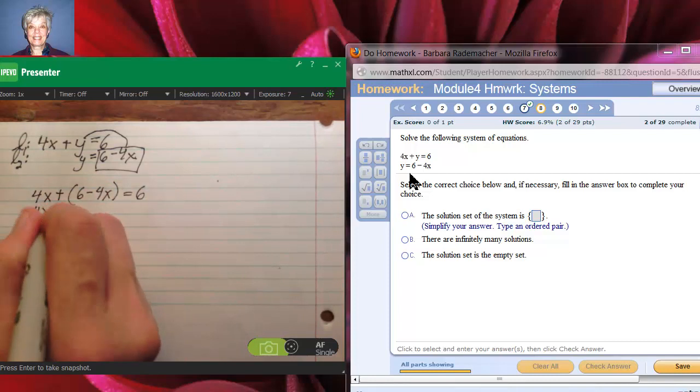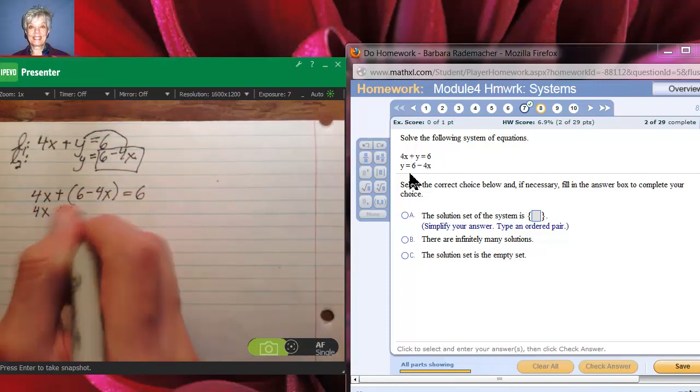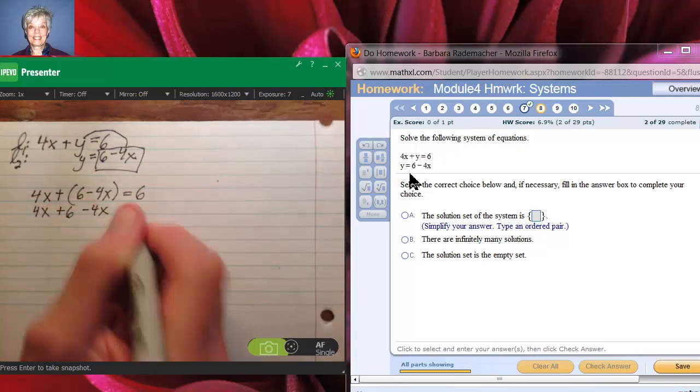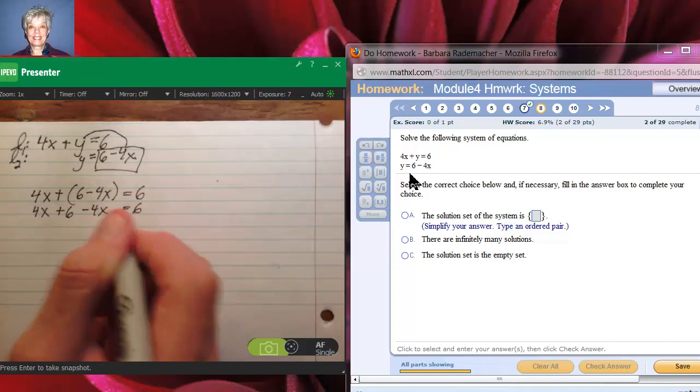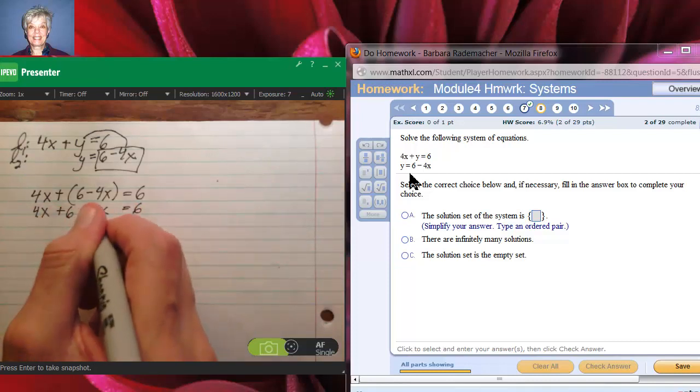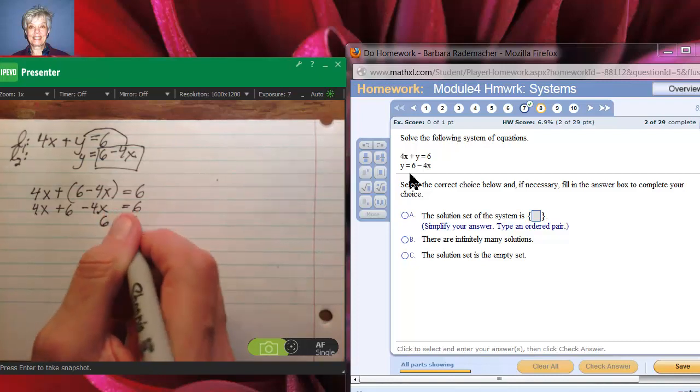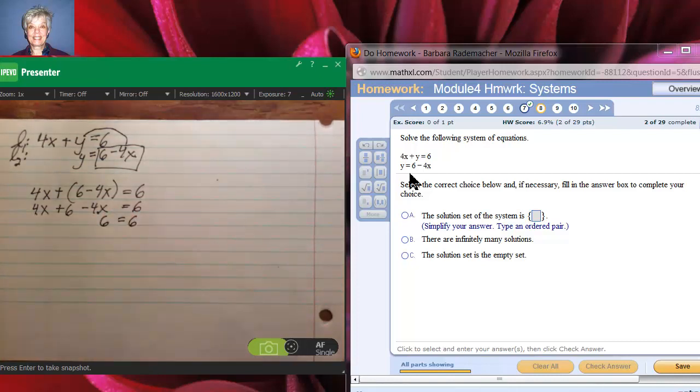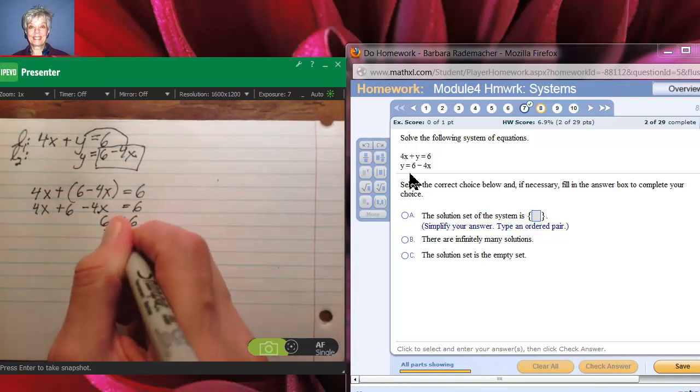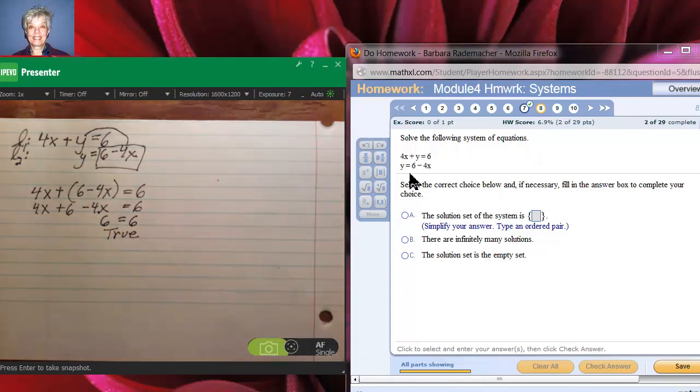So, you'll have 4x plus 6 minus 4x equals 6. This minus this is 0, so you're left with 6 equals 6. All your variables have canceled out, and you're left with what is ultimately true. I mean, it is true that 6 equals 6. That's a true thing, a true statement, but it's totally weird.